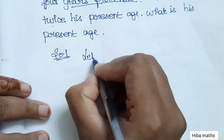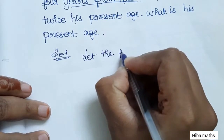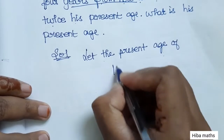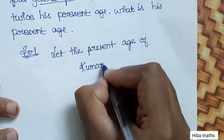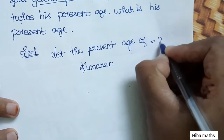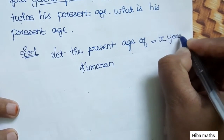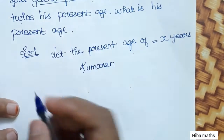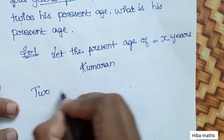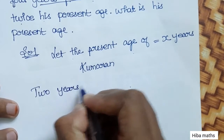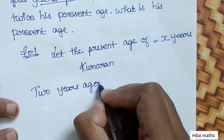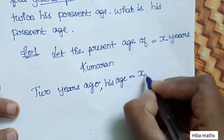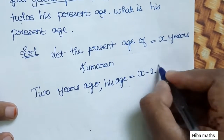Let the present age of Kumaran be x years. So 2 years ago, his age was x minus 2.